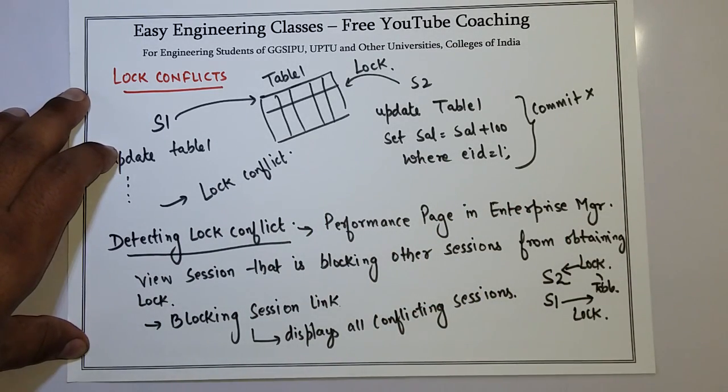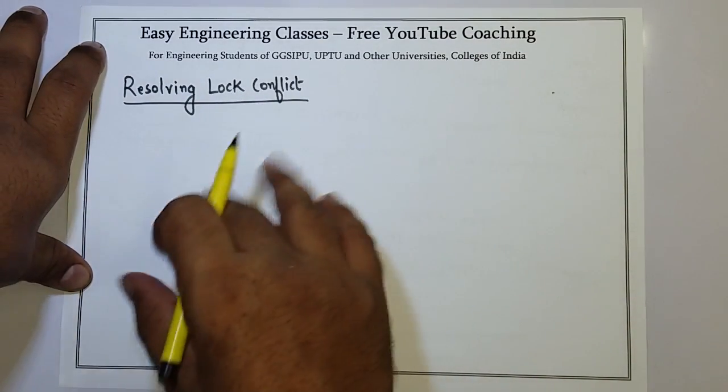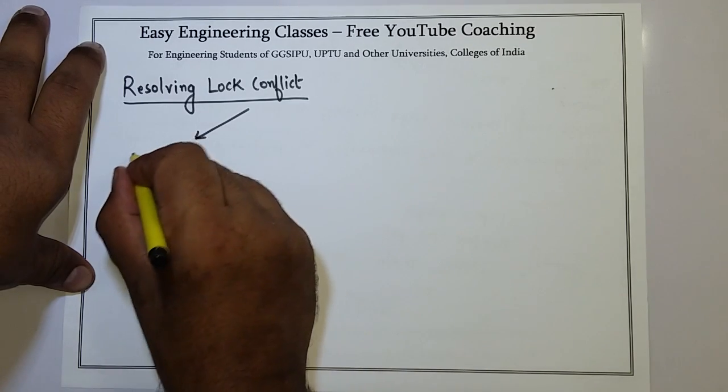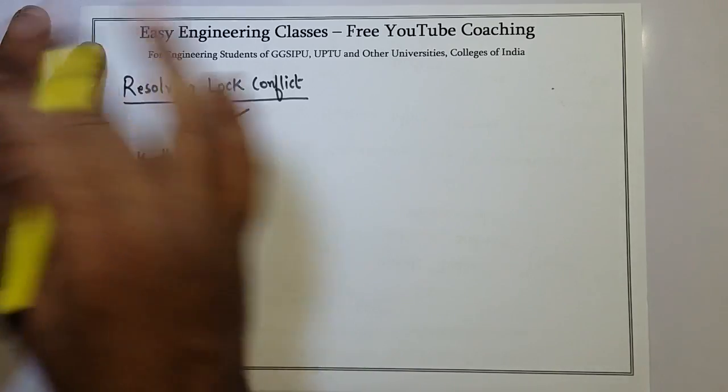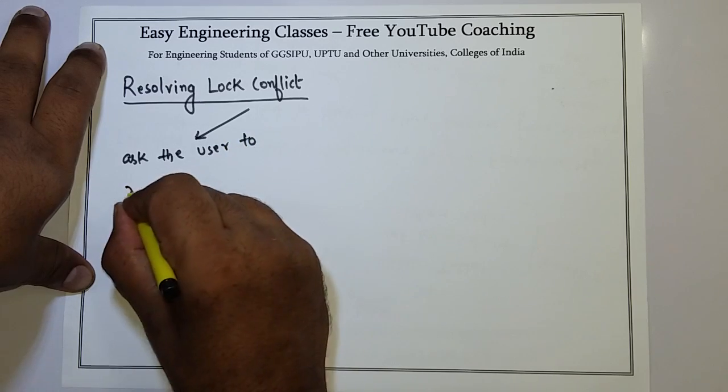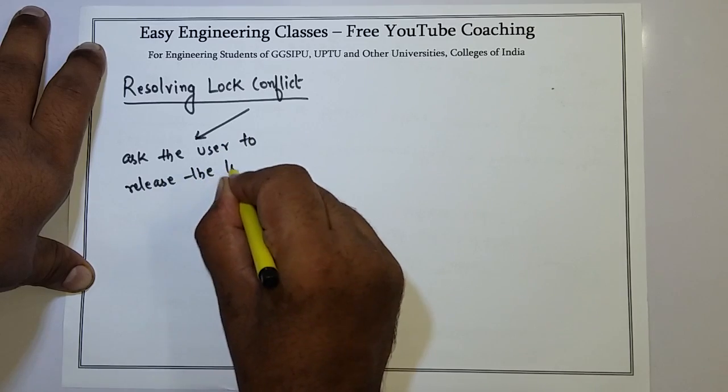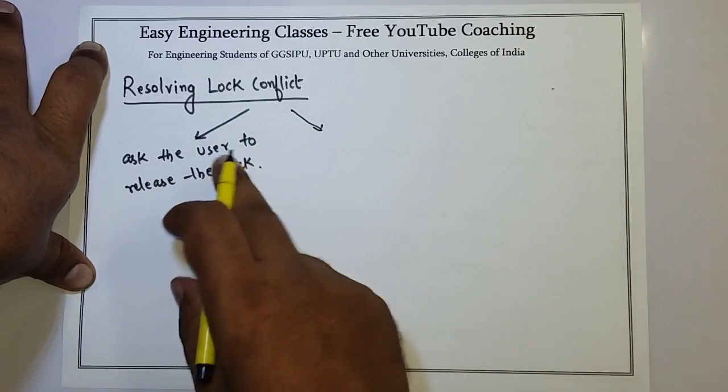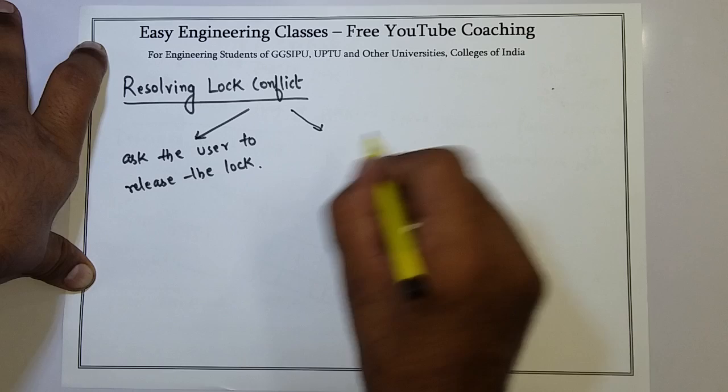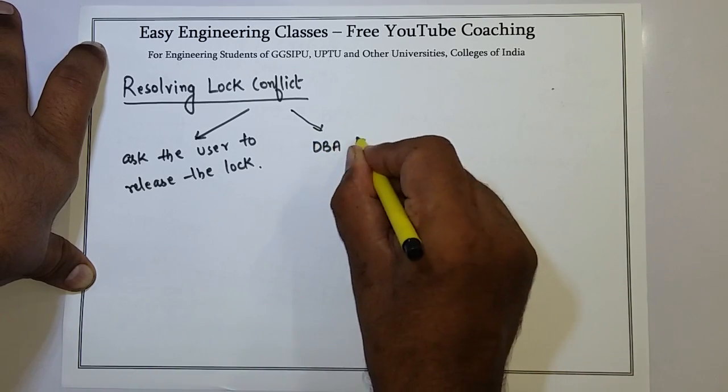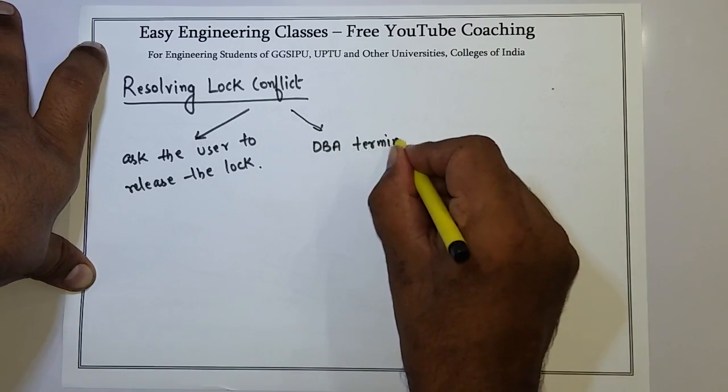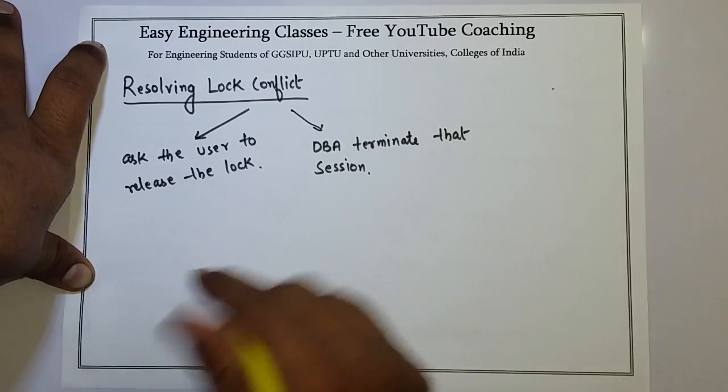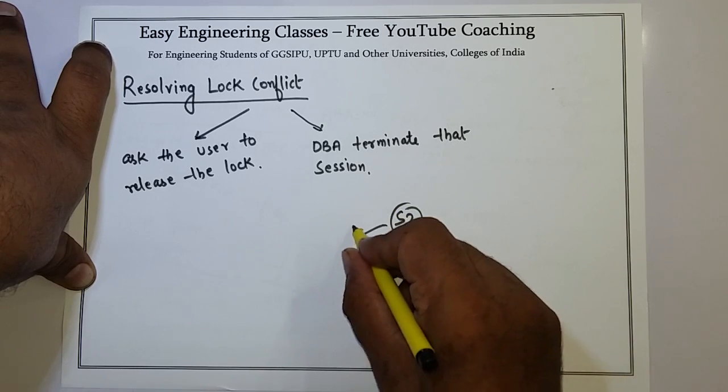Now we will see how to resolve the lock conflict. Resolving lock conflict can occur in various ways. One way is to identify the session which is causing the problem, and then ask the user which is the owner of that session to release the lock. So one way is to ask the user of that session to release the lock. And the second way, if the user doesn't release, if the user refuses to release the lock, then DBA simply has to terminate that particular session. So once the session which is causing the problem, which in this case is S2.